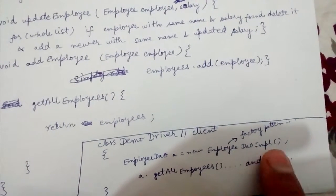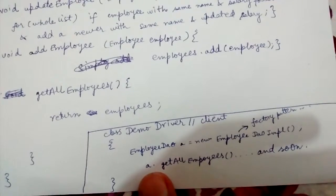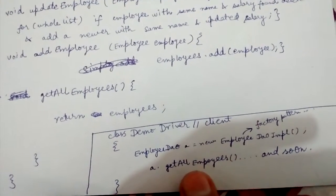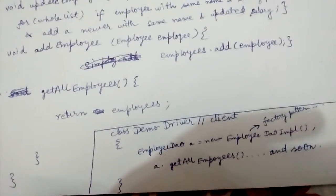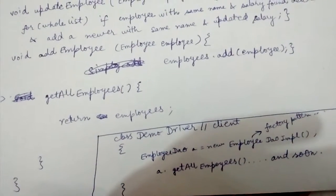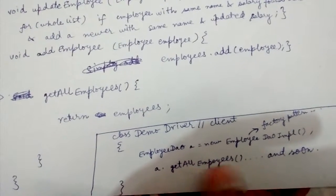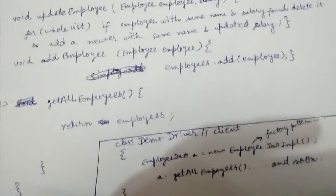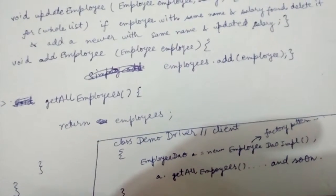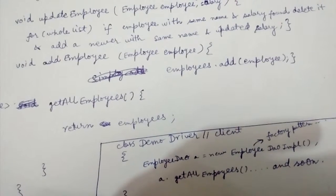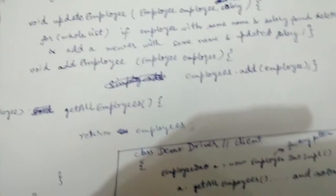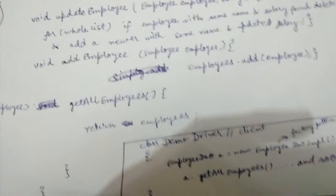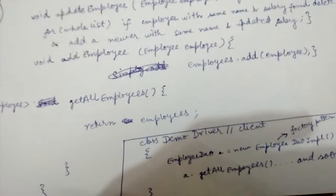The client can just call dao.getAllEmployees(). If the underlying data storage is a SQL database, this method will be translated into something like 'SELECT * FROM employees'. If this is a linked list, we return that whole linked list. If it's an array, we iterate over the whole array, feed all entries into a list, and return that list.